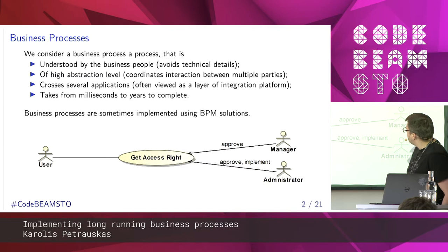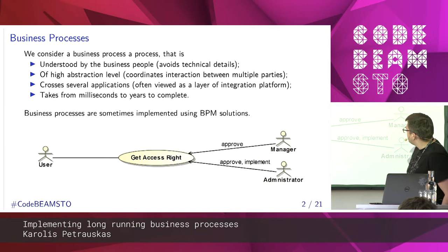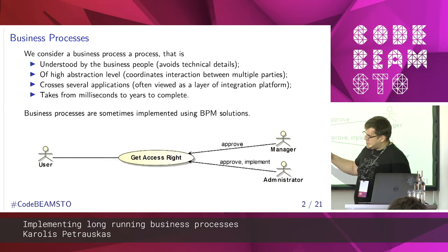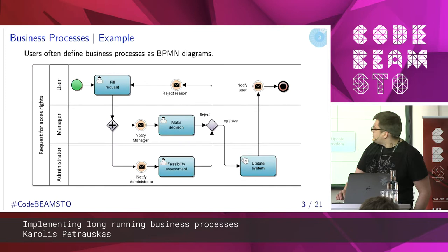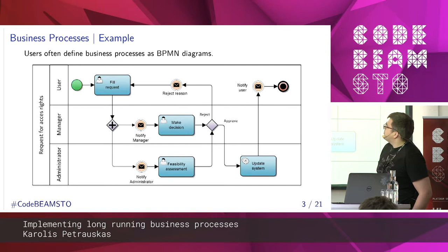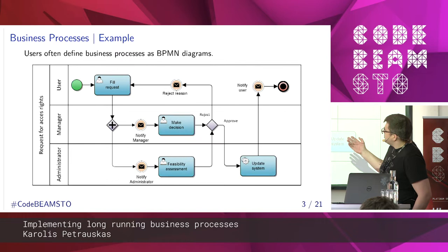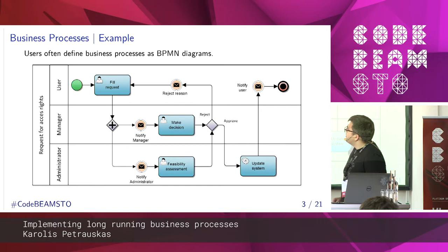As an example for this presentation, I will cover the process for a user to get access rights, maybe to some server via SSH, and that process needs to be approved by a manager and an administrator. When talking with business people and collecting requirements, the process is drawn like this — it's a BPMN diagram, and we have some lanes here.